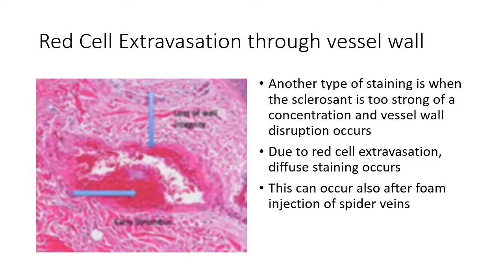This is a histological slide of red cell extravasation through the vessel wall. Another type of staining is when the sclerosant is too strong a concentration and vessel wall disruption occurs. Due to the red cell extravasation, diffuse staining occurs. This can also occur after foam injection of spider veins.